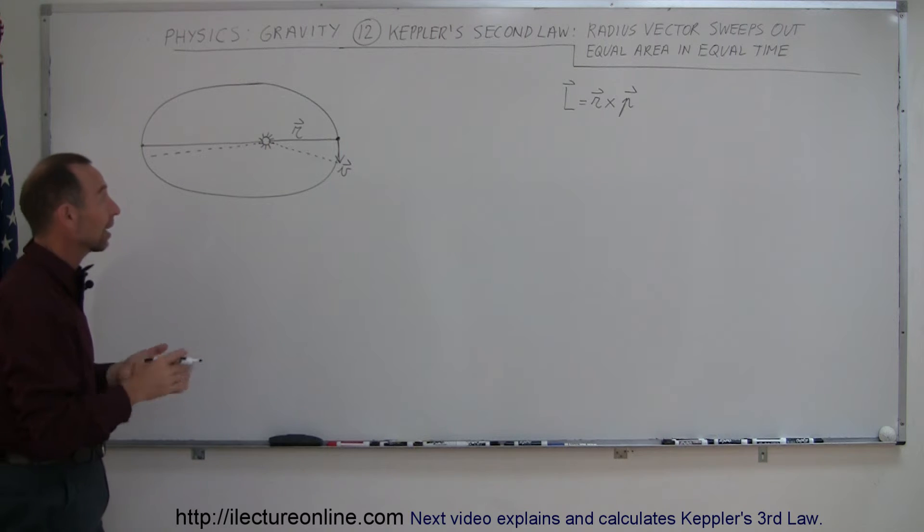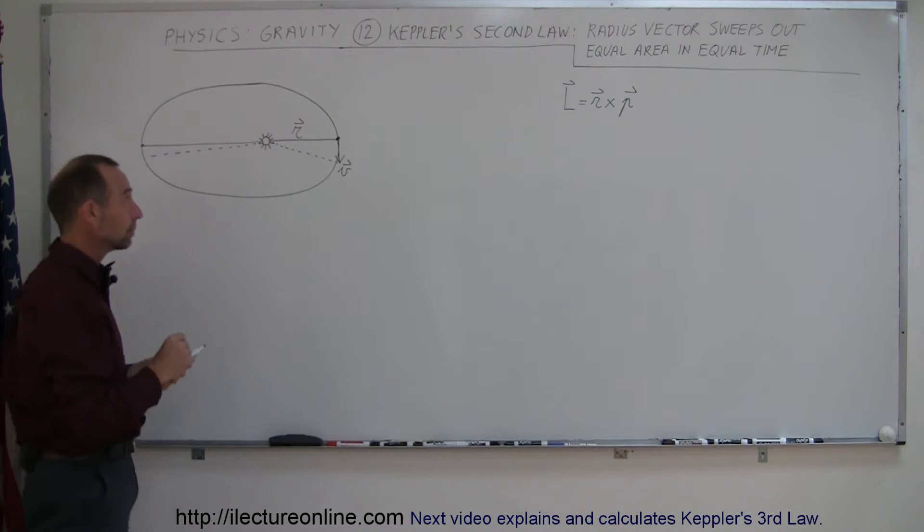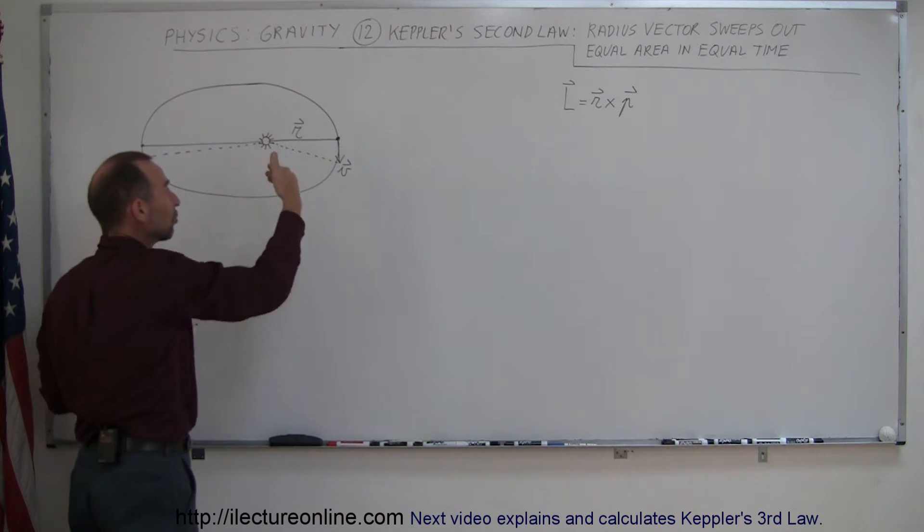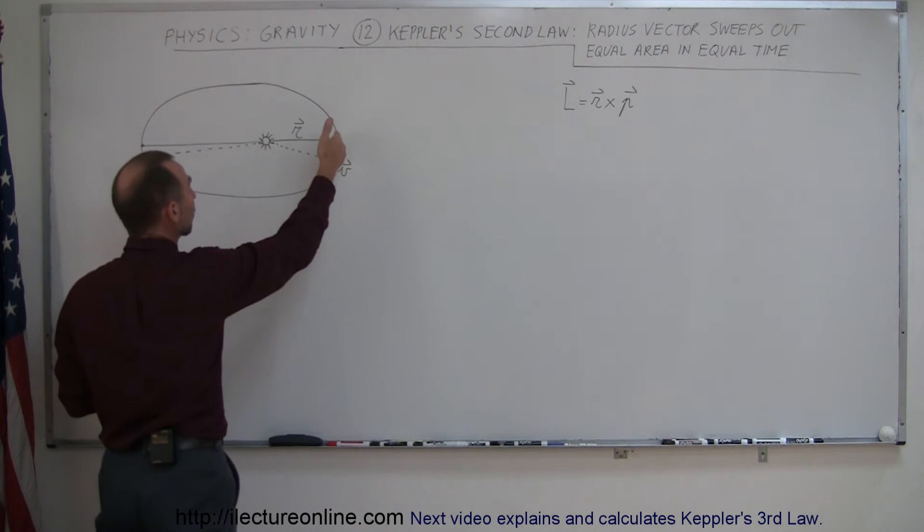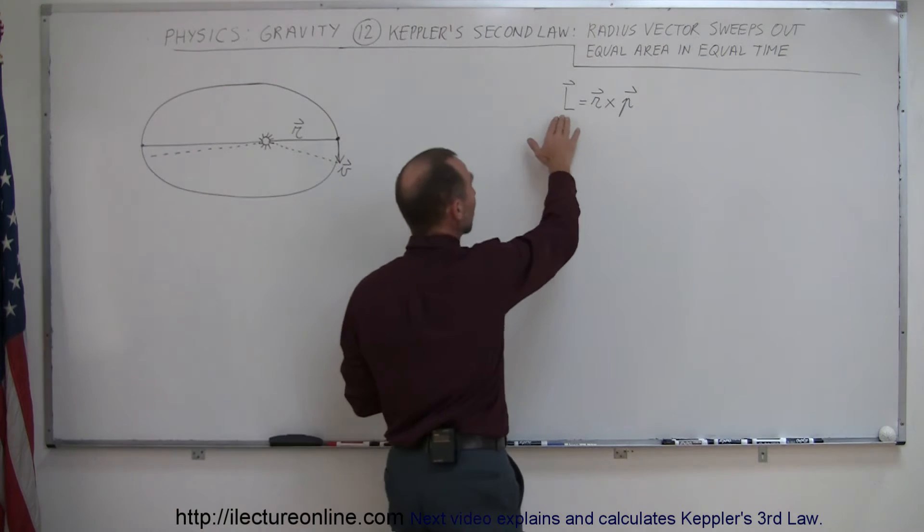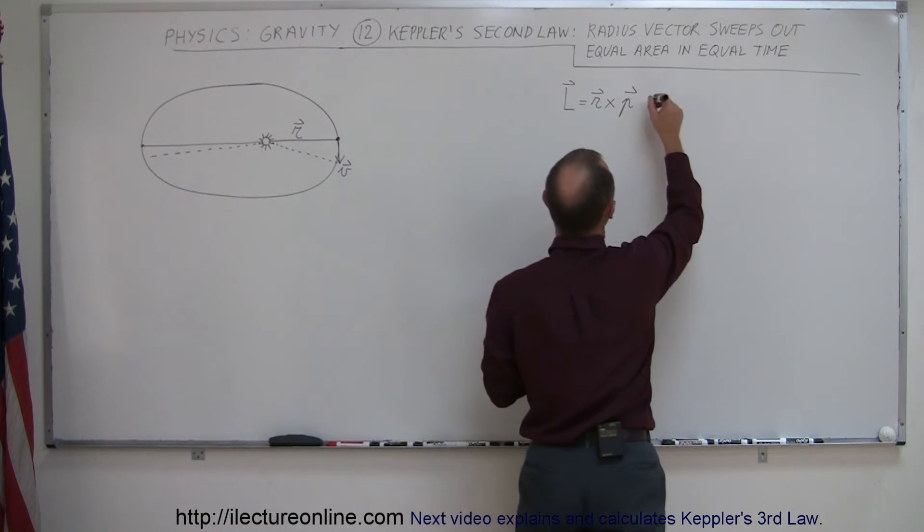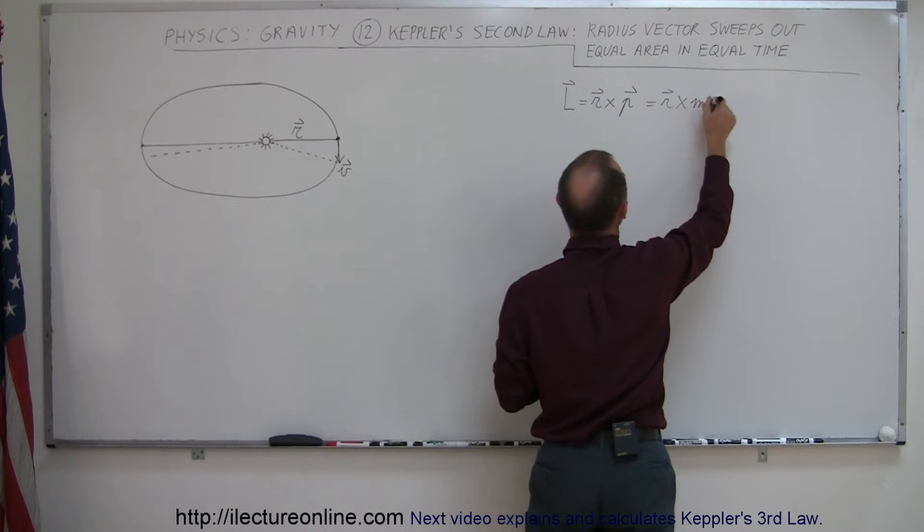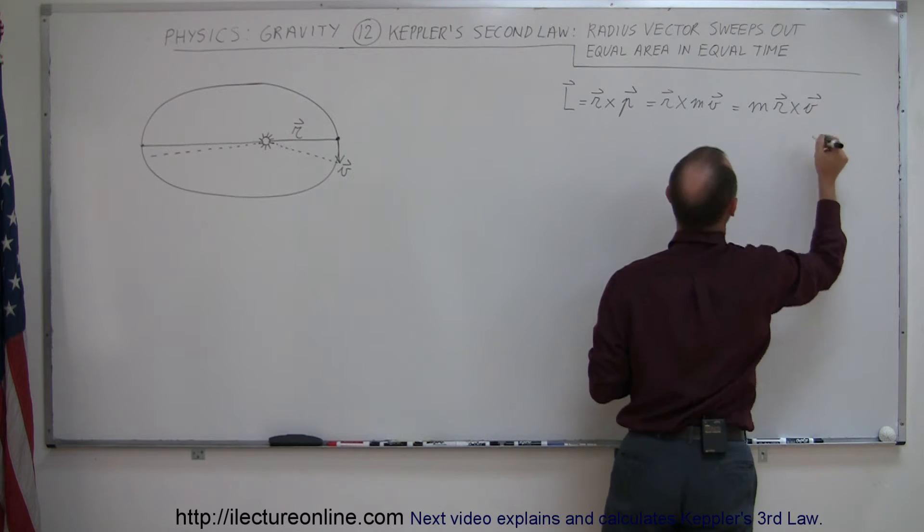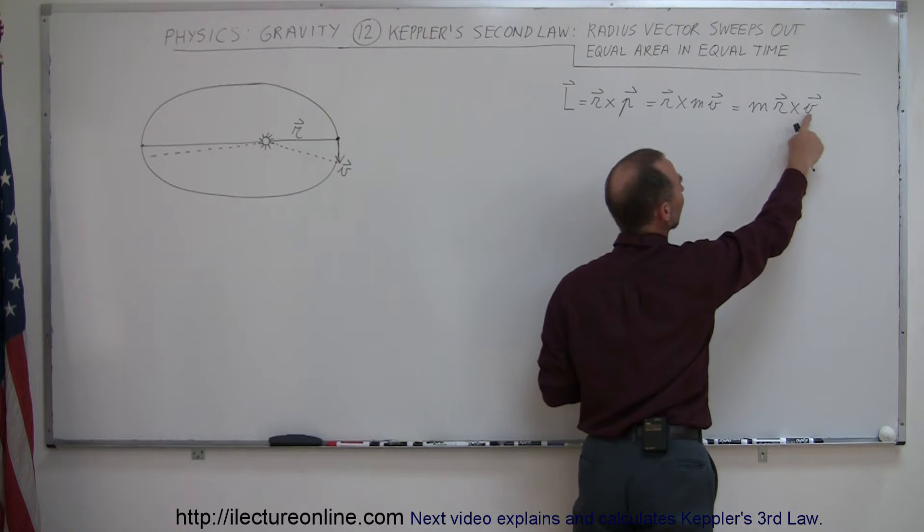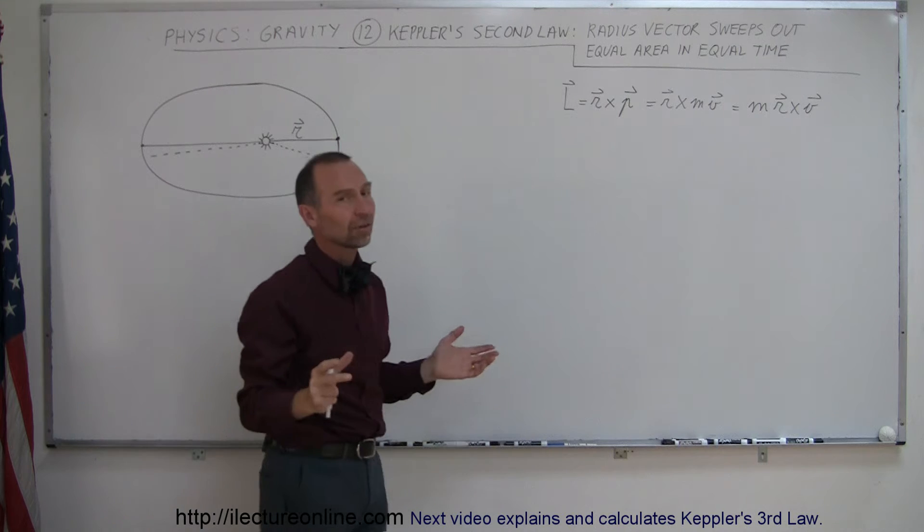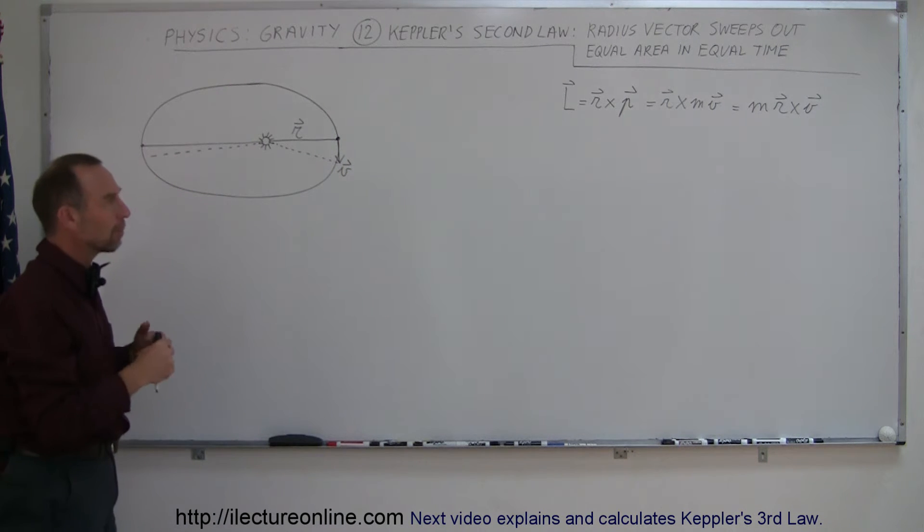But we can now show with physics that makes a lot of sense. For example, the angular momentum of an object should never change, which would therefore predicate that when the object is close, it would have to travel faster. When the object is far away, it would have to travel slower because the angular momentum L is R cross P, which can be written as R cross MV, which can be written as M times R cross V. So, in other words, if R becomes bigger, V has to become smaller, and if R becomes smaller, V has to be bigger, so that L always stays constant.